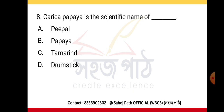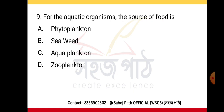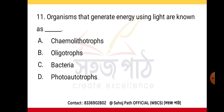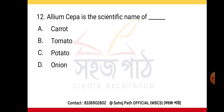Carica papaya is the scientific name of papaya. For aquatic organisms, the source of food is phytoplankton. Canis vulpes is the scientific name of fox. Organisms that generate energy using light polysaccharides are known as photoautotrophs. Allium cepa is the scientific name of onion.